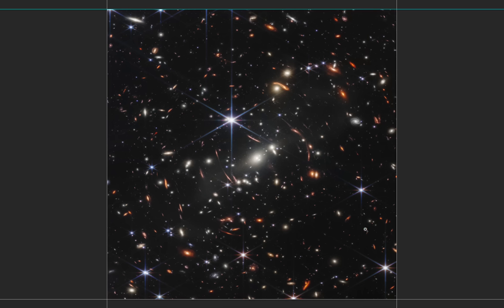All right everyone, here we are. Let's take a look at the latest image, or the first image from the James Webb Space Telescope. This is the highest resolution image that was released by NASA.